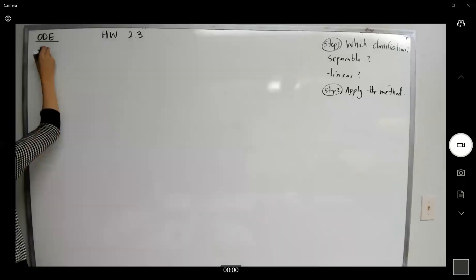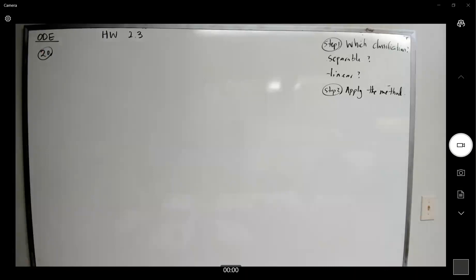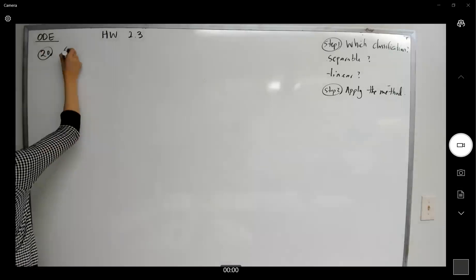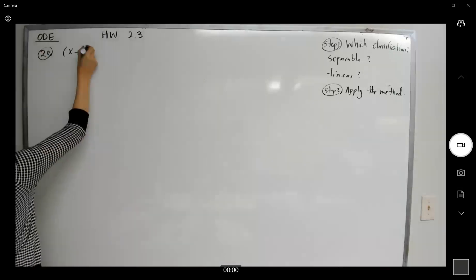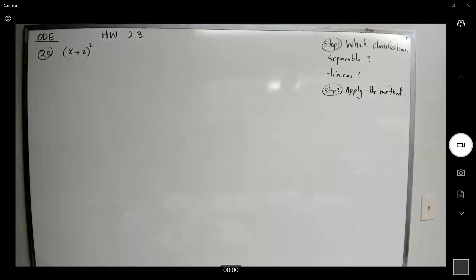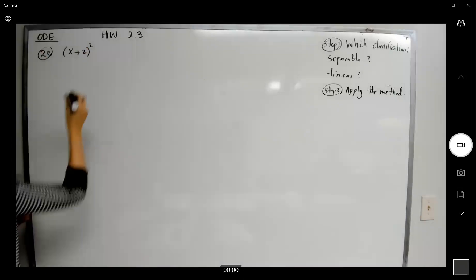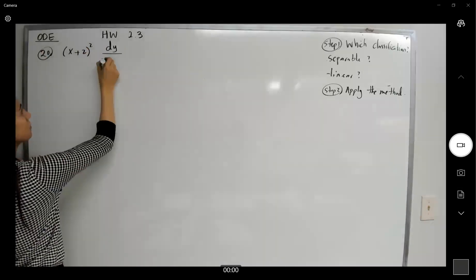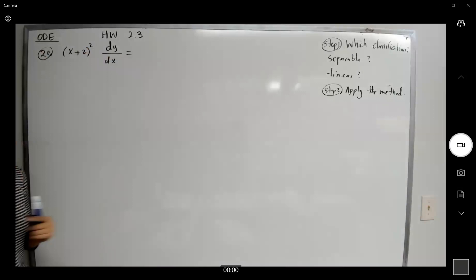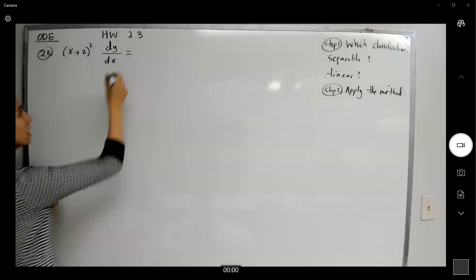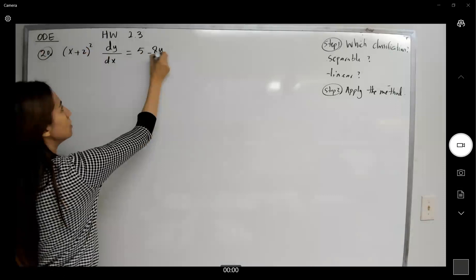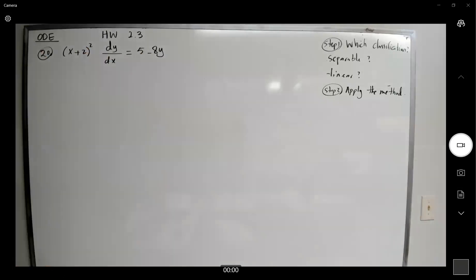Question 20 says solve the following. The function is (x+2)² and you have dy/dx equals 5 minus 8y minus 4xy.